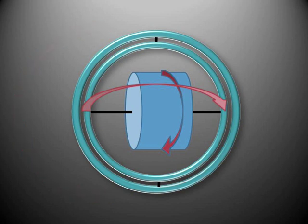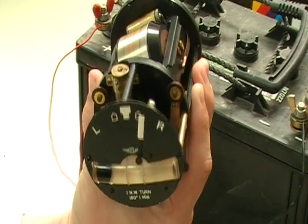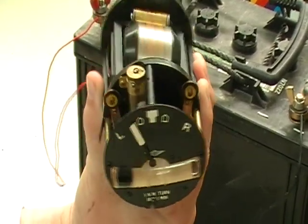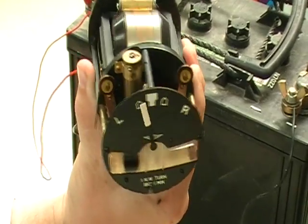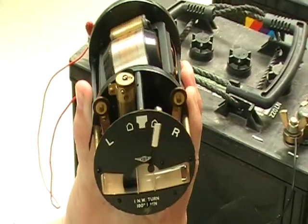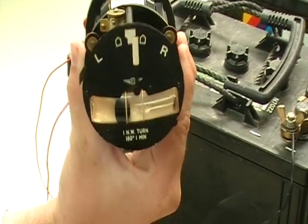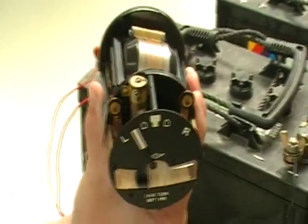The turn indicator uses this property to indicate the rate of turn. Yaw in the aircraft applies a torque to the spinning rotor in the instrument. The precession in the instrument is indicated as the rate of turn. Roll and pitch have no effect on the turn indicator.